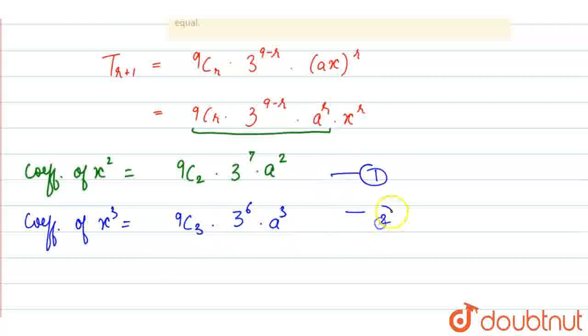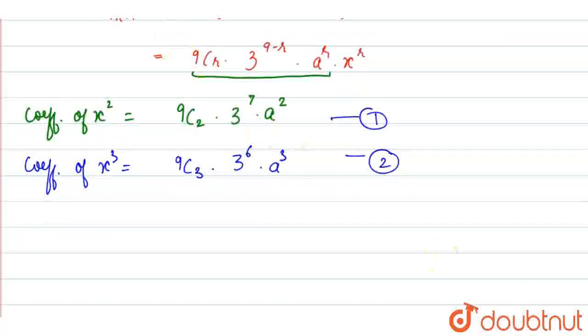Now, these both are equal, as we have been given in the question. So equating this: 9C2 times 3 to the power 7 times a squared equals 9C3 times 3 to the power 6 times a cubed.